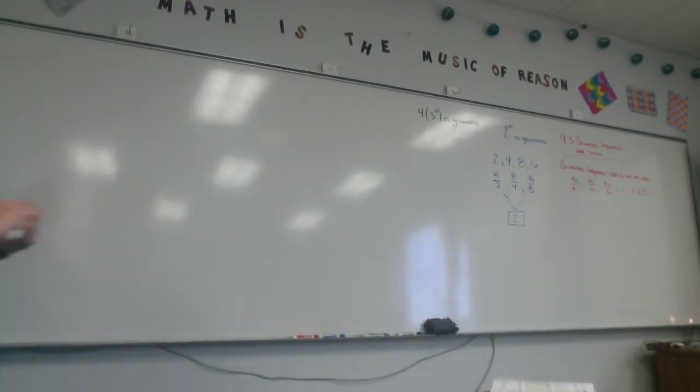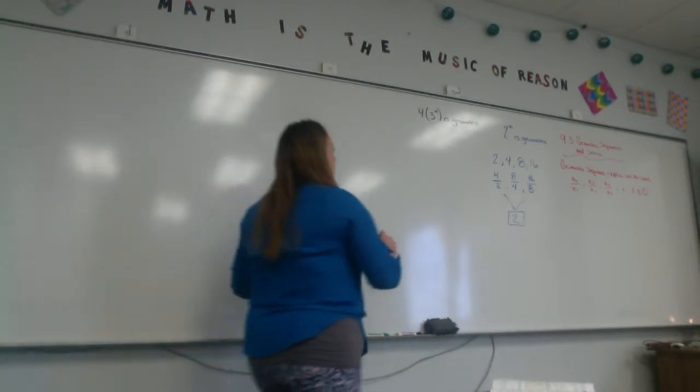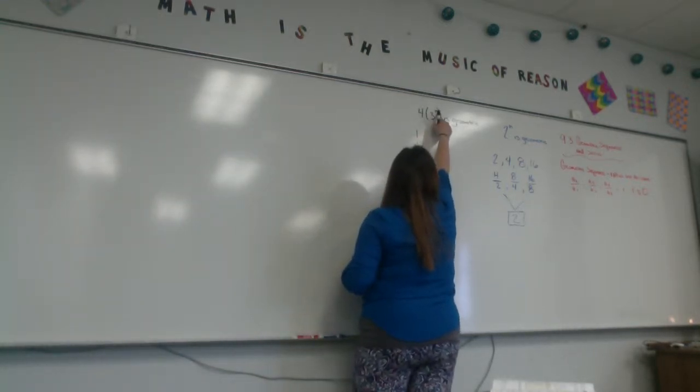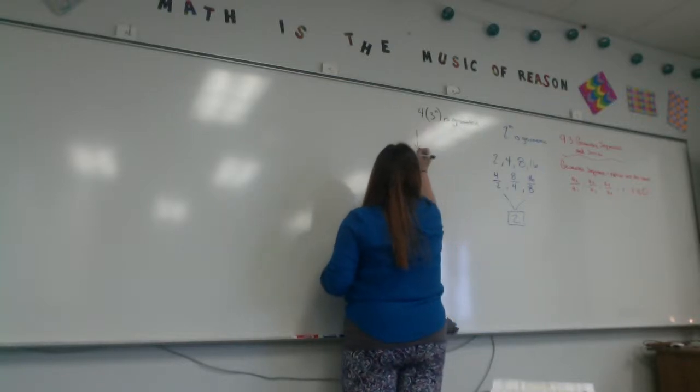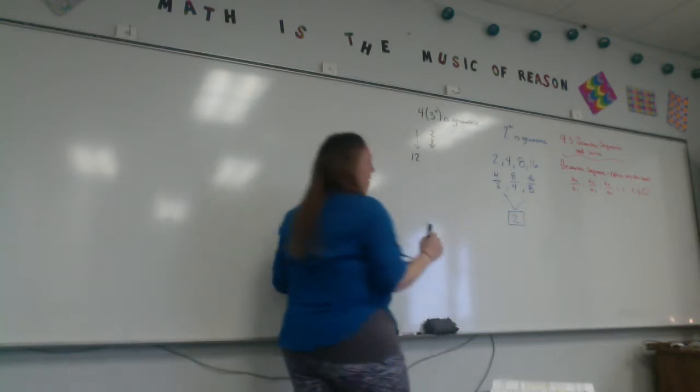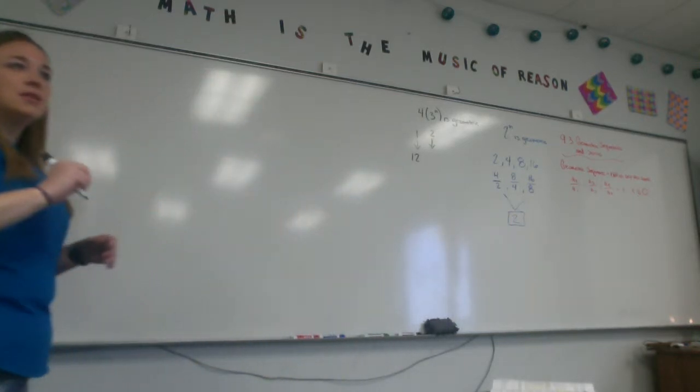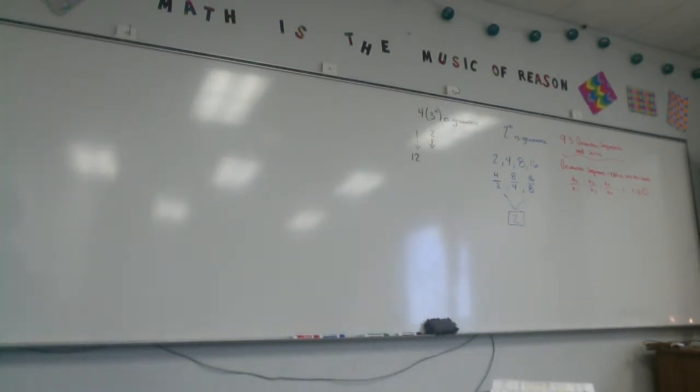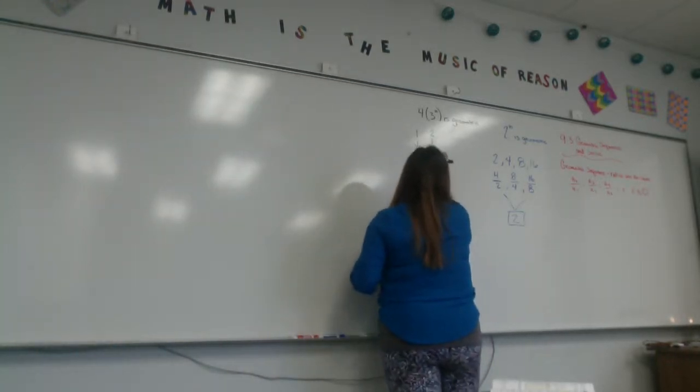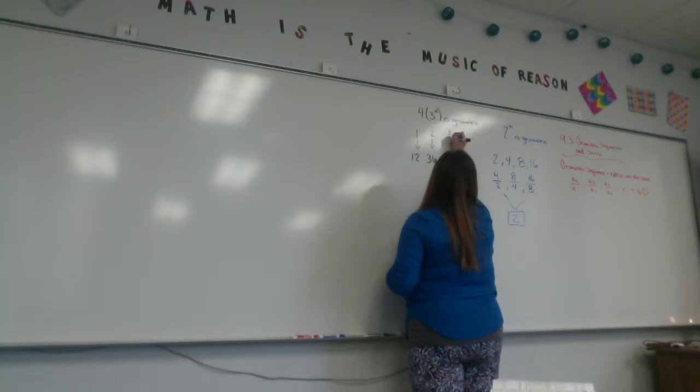We're going to start by figuring out what the sequence is. To start out by figuring out the sequence, you start with the number 1 and plug it into n. If I plug 1 into n, you get 12 because 3 to the first is 3, 3 times 4 is 12. If you plug in a 2, 3 squared is 9, and 9 times 4 is 36. If you plug in a 3, 3 cubed is 27, and 27 times 4 is...